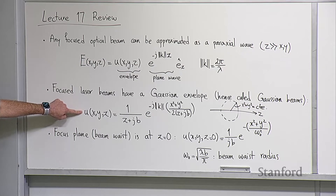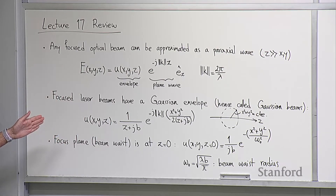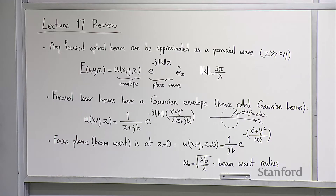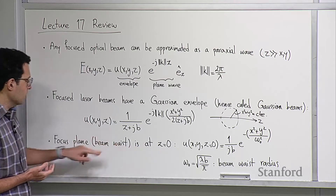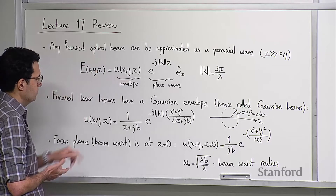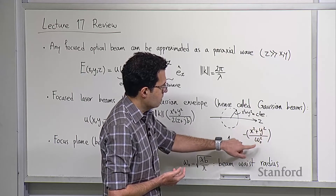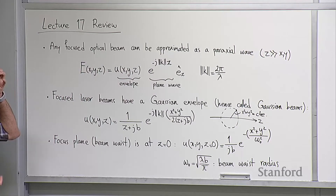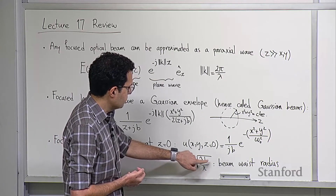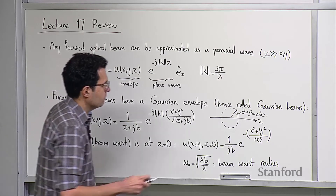From this envelope, the plane (z-value) at which the Gaussian waist size is minimized turns out to be z = 0 — called the beam waist. Plugging z = 0 into the equation, the envelope becomes (1/jb)·e^(-(x²+y²)/W₀²), where W₀ = √(λb/π) is the beam waist radius. W₀ is the radial distance from the optical axis at which the field amplitude drops by 1/e.